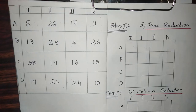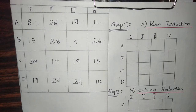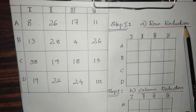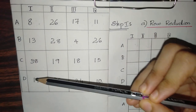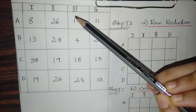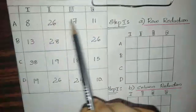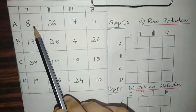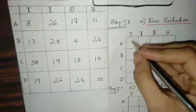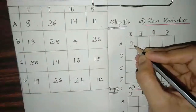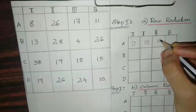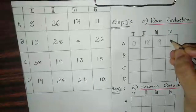Let us start with the first step: row and column reduction. In row reduction, subtract the minimum value of each row from all entries of that row. For the first row, the minimum value is 8. So: 8−8=0, 26−8=18, 17−8=9, 11−8=3.